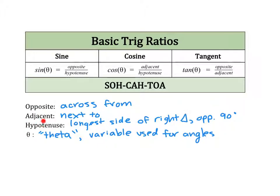If you can determine which leg is opposite, which leg is adjacent, and which side is the hypotenuse, you can find any basic trig ratio. These are ratios you should absolutely have memorized. There is a saying that math teachers use to remember them: SOHCAHTOA. SOH means sine is opposite over hypotenuse, CAH means cosine is adjacent over hypotenuse, and TOA means tangent is opposite over adjacent.